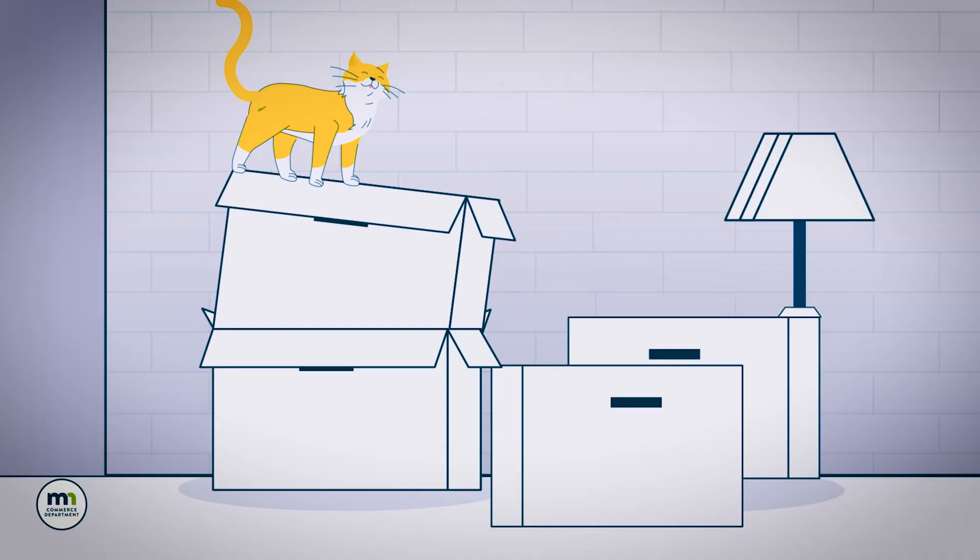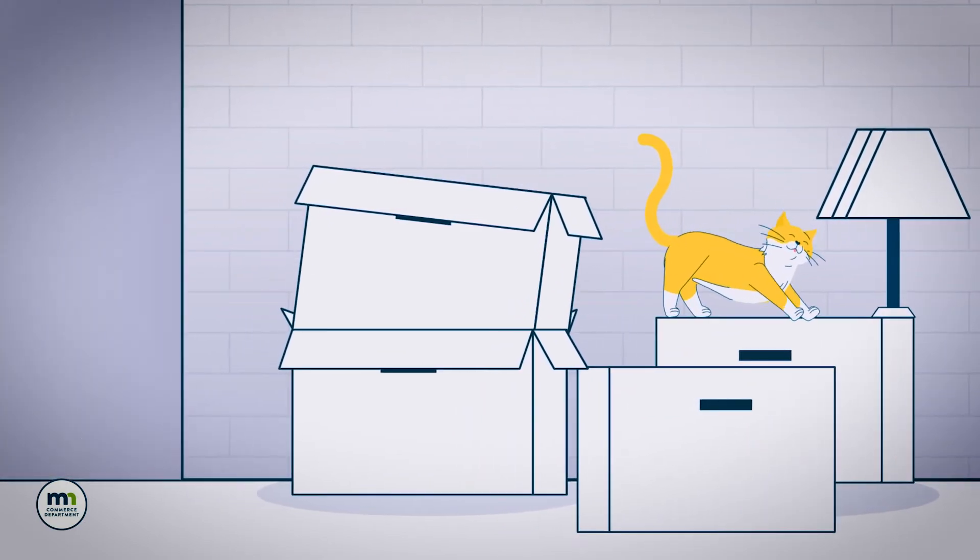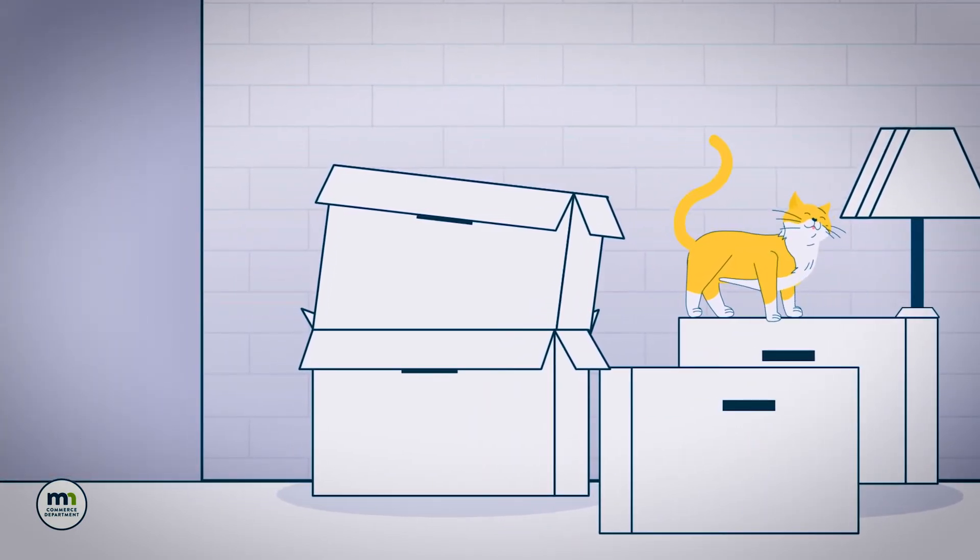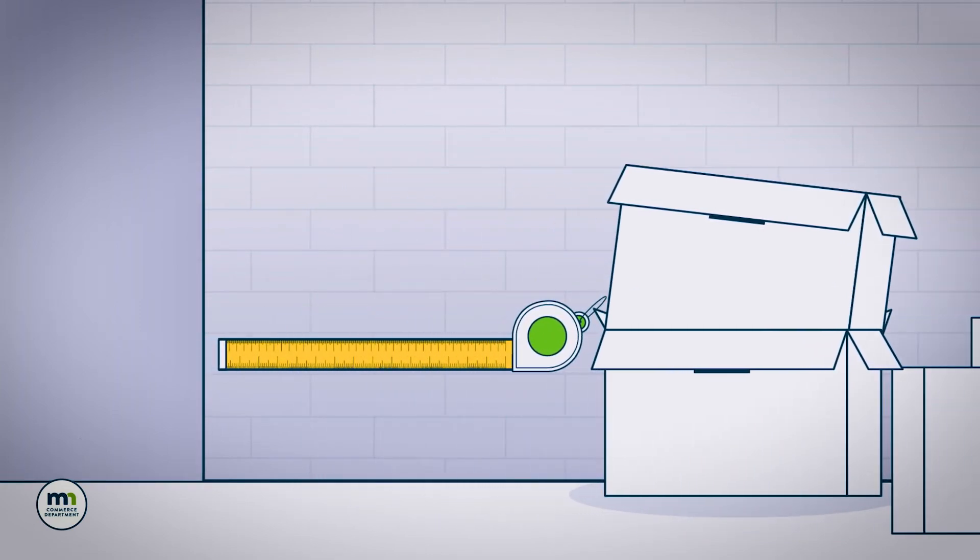In the basement, the contractor will need access to all of the areas that will be insulated. So shelving, boxes and other items must be moved at least three feet away from the walls and equipment.